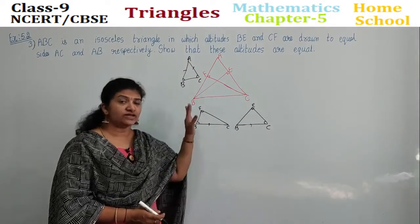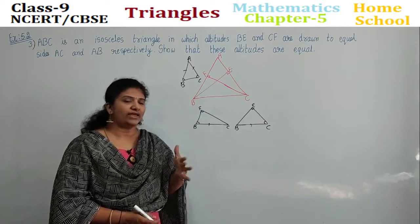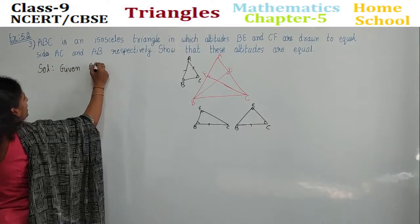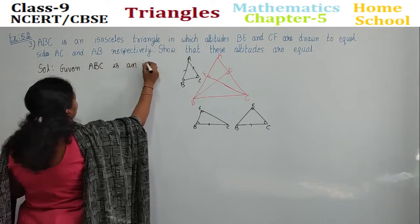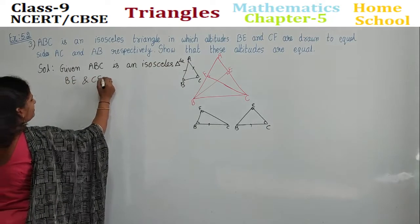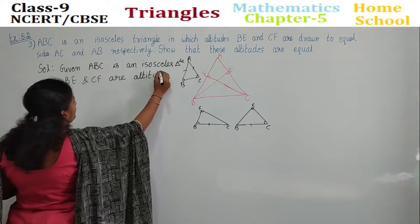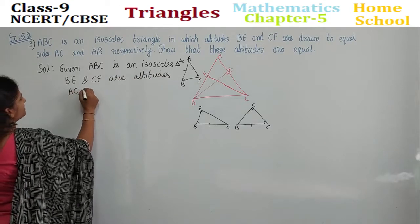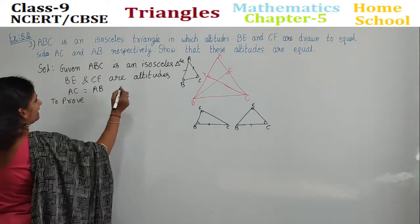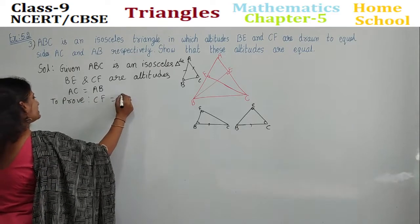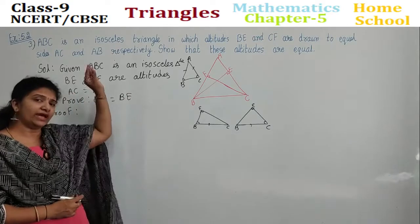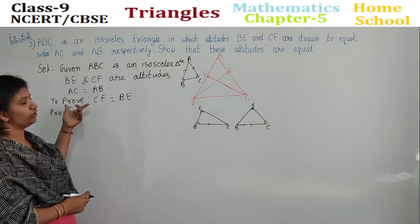This is the thing we need to prove. First you need to understand the figure — what is given and how we need to do the problem. Given: ABC is an isosceles triangle in which BE and CF are altitudes and AC is equal to AB. To prove: the altitudes are equal, that is CF is equal to BE. Let's start our proof.